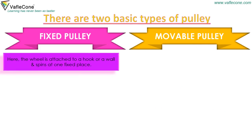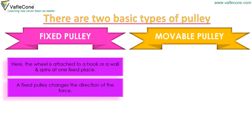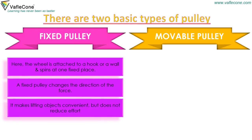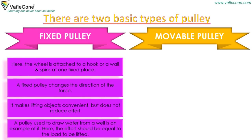In a fixed pulley, the wheel is attached to a hook or a wall and spins at one fixed place. A fixed pulley changes the direction of the force — it makes lifting objects convenient but does not reduce effort. A pulley used to draw water from a well is an example. Here, the effort must be equal to the load to be lifted.